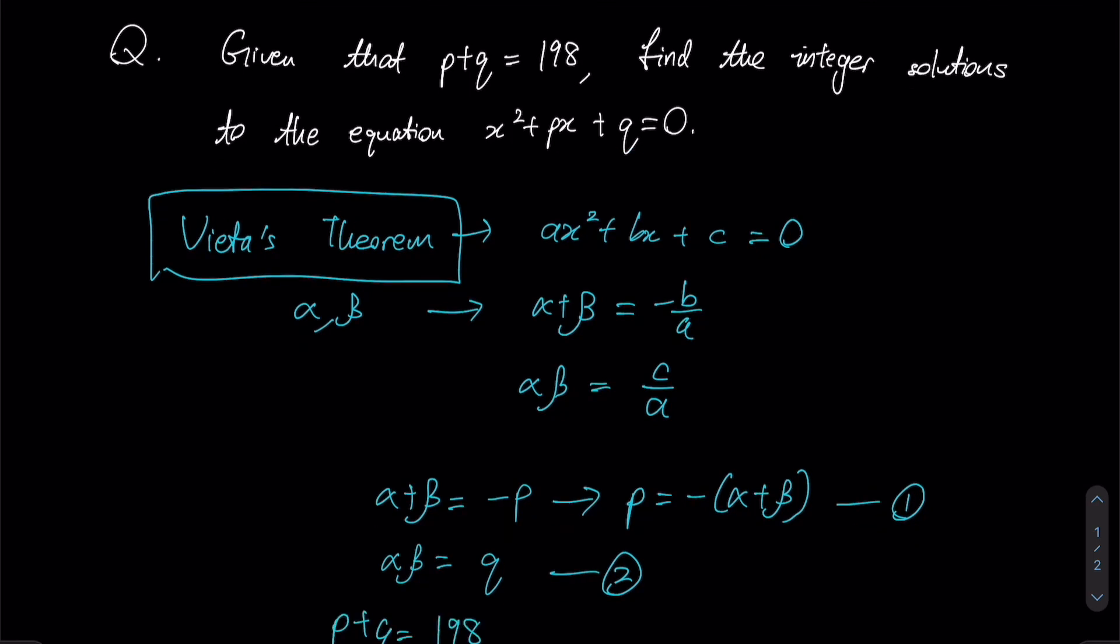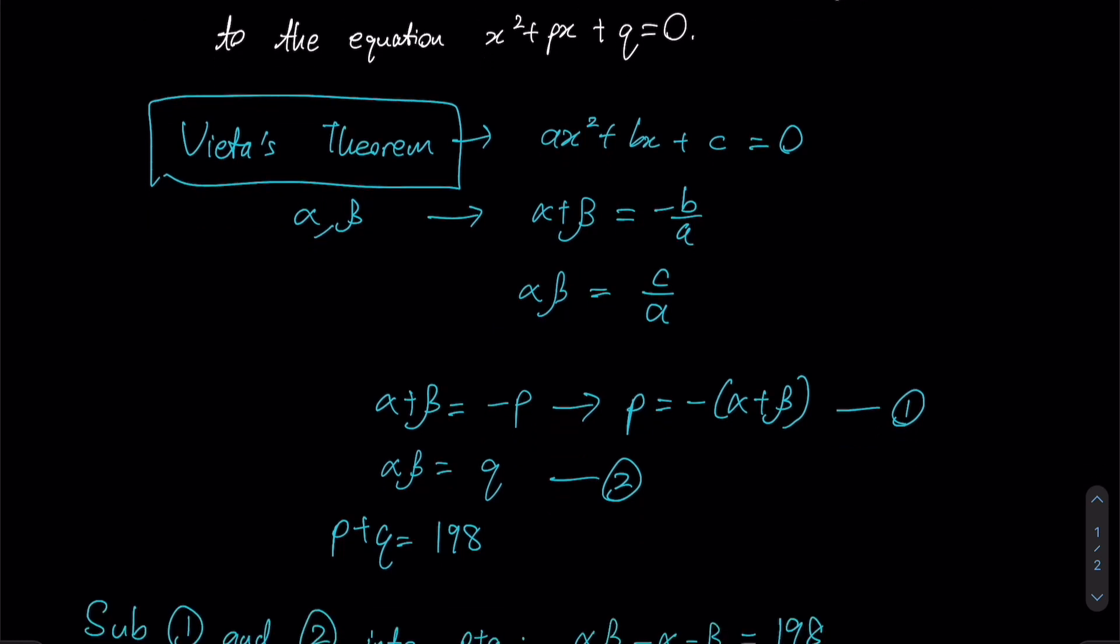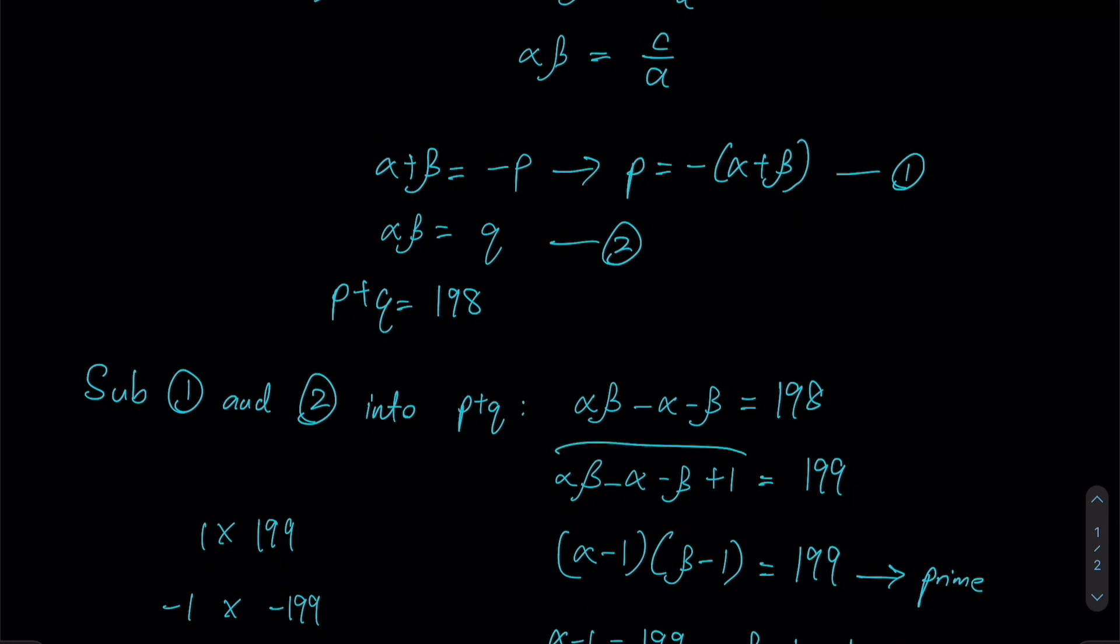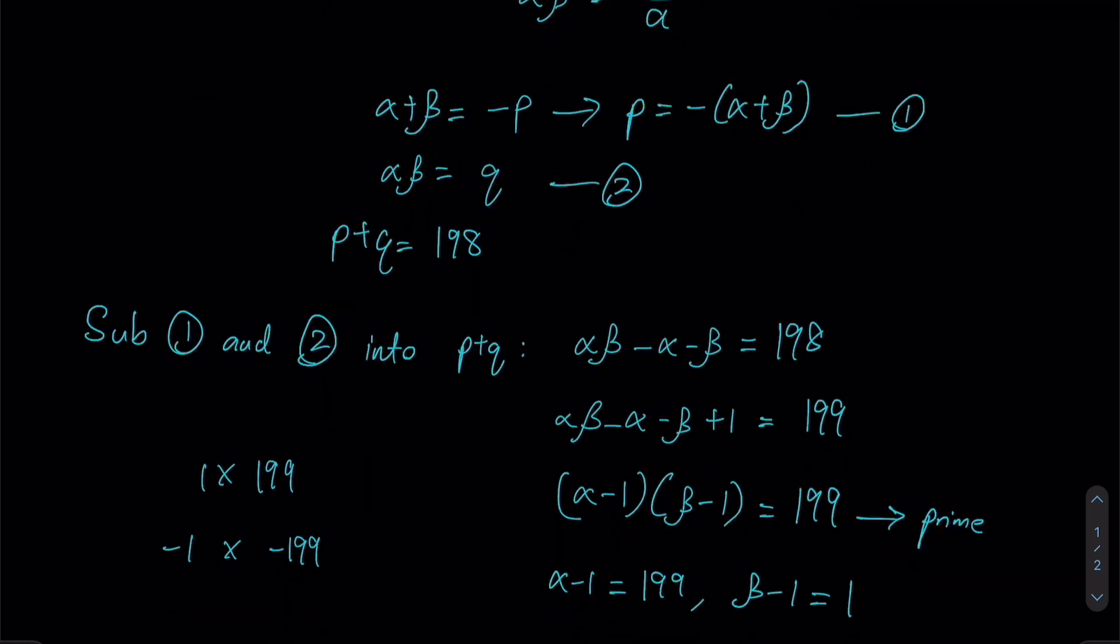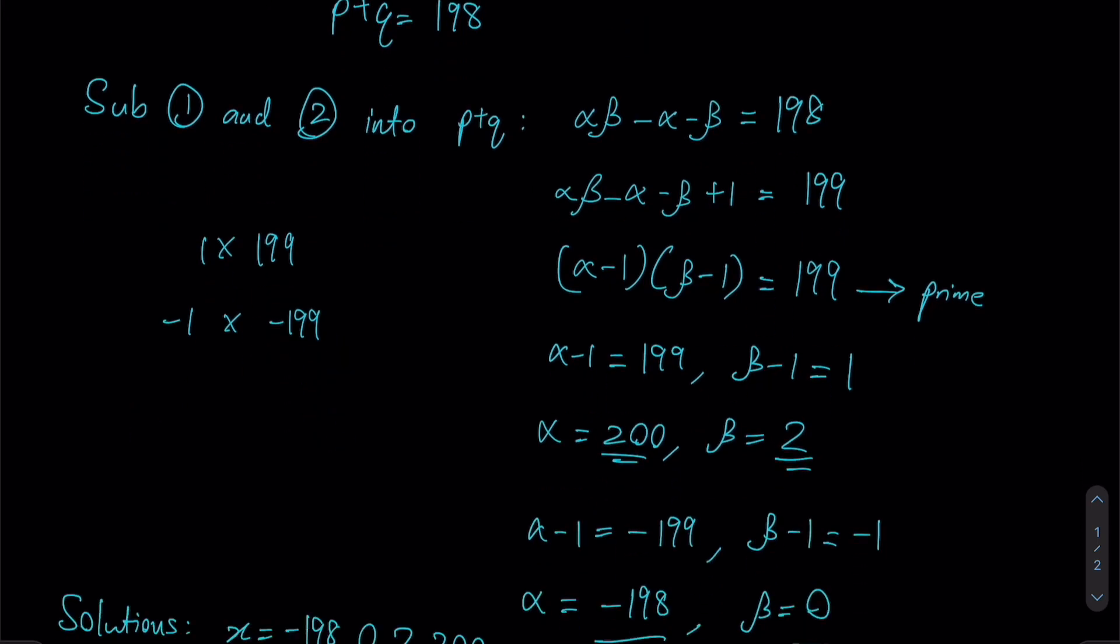Just to recap, we only know that p + q = 198, but we don't know the exact values for p and q themselves, which is why using Vieta's theorem to give us an expression for sum of roots as well as product of roots can be so useful here. Once we achieve this form, recognize that it can be factorized into (α - 1)(β - 1), and since 199 is prime, there are only two possibilities.